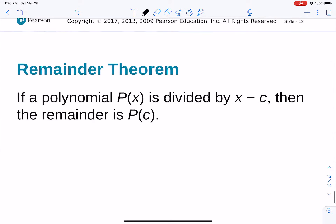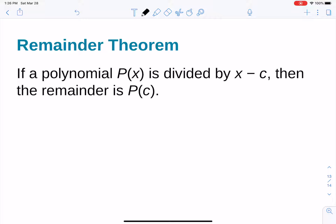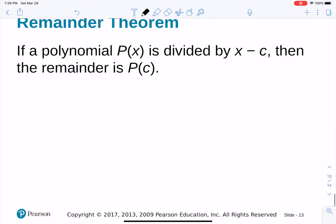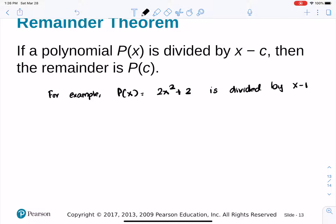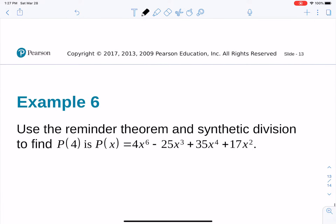There is an important concept called the remainder theorem: if a polynomial p(x) is divided by x minus c, then the remainder equals p(c). For example, if p(x) equals 2x squared plus 2 and we divide by x minus 1, the remainder theorem states the remainder is p(1), which is 2 times 1 squared plus 2, giving us 4.